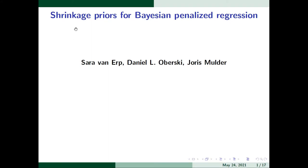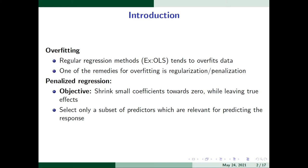In this video I am going to talk about the shrinkage process for Bayesian penalization regression, based on a paper by several authors. To talk about regularization or penalization, we first need to discuss overfitting, because regularization is a solution for overfitting. Under penalized regression, the main objective is to shrink small coefficients towards zero while leaving true effects as they are, thereby selecting only important predictors.